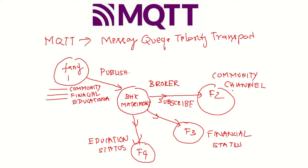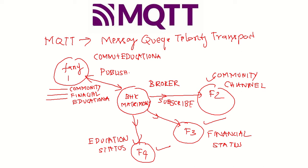You can subscribe to three different channels. Family 2 subscribes to the community channel on BHK Matrimony. Family 3 subscribes to the financial status channel. Family 4 subscribes to the educational status channel. So we have one community-based channel, one financial status-based channel, and one educational qualification-based channel.